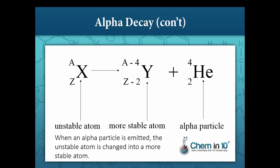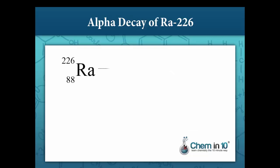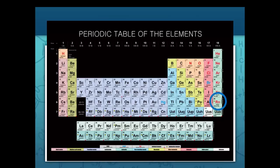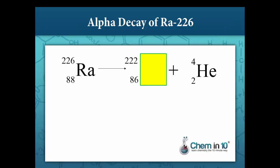The nuclide radium-226 undergoes alpha decay by emitting an alpha particle. When radium gives off an alpha particle, the new atom has a mass number four less than that of radium, so the new mass number would be 222. Also, the new atom will have an atomic number two less than radium, so its atomic number will be 86. Notice how the mass numbers on the product side, 222 plus 4, equal 226 on the reactant side, and the atomic numbers 86 plus 2 equal 88. Looking at the periodic table, element 86 is radon, so our newly formed nuclide is radon-222.